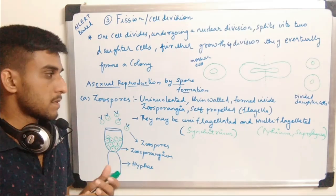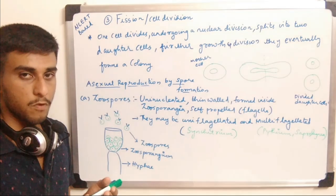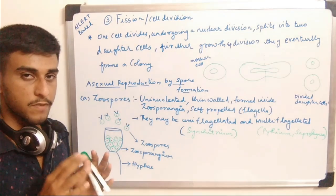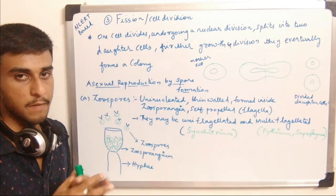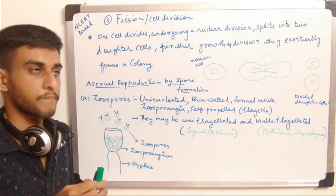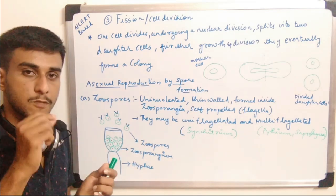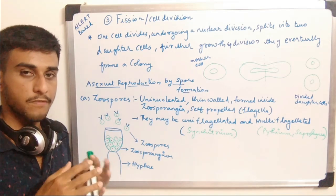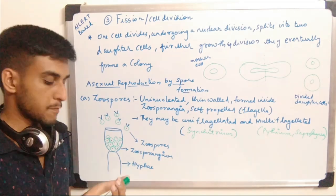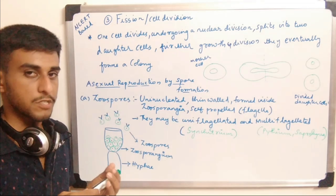The first spore type to discuss is the zoospore. Zoospores are certain single cells produced by fungi asexually in a specialized organ called the zoosporangium. A sporangium is a structure used to produce spores; if the structure is called zoosporangium, the spores produced are zoospores.